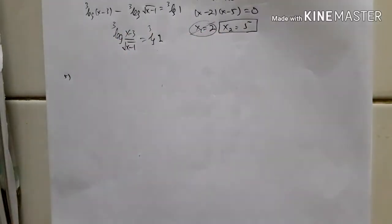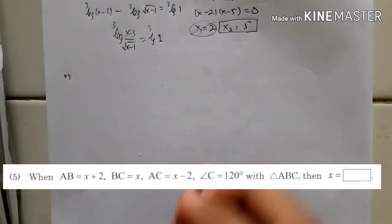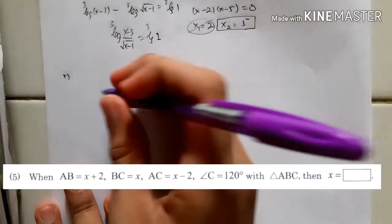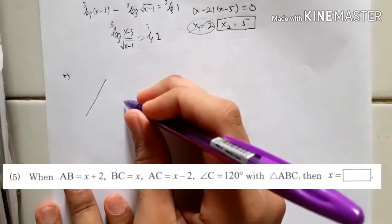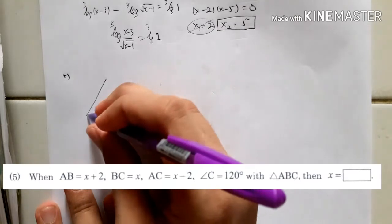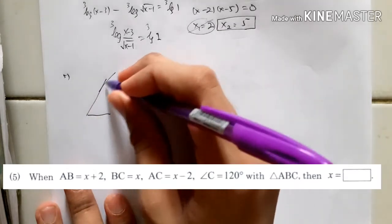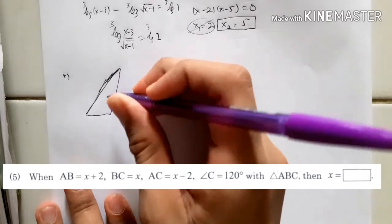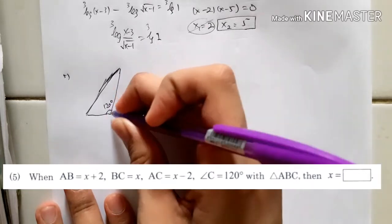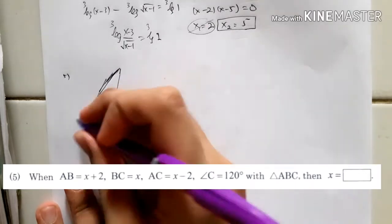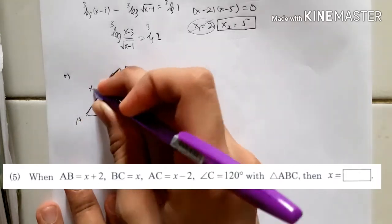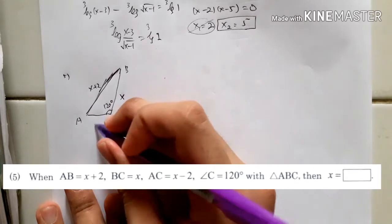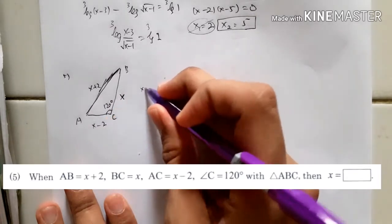And now for number 5, you have a triangle there — triangle ABC — where C is this angle. You have AB is x plus 2, BC is x, AC is x minus 2. So x is what?